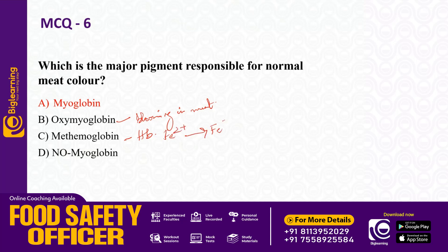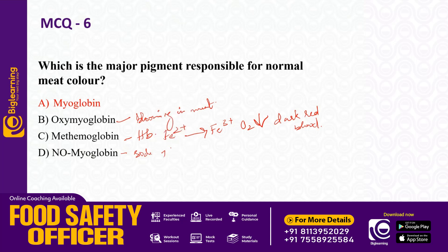Metmyoglobin and hemoglobin: when oxidized from Fe2+ (ferrous) to Fe3+ (ferric) ions, oxygen-carrying capacity is reduced and it has a dark red color. Nitric oxide myoglobin is formed using sodium nitrates and nitrites as curing agents for preservation — it is unstable but gives a bright red color.